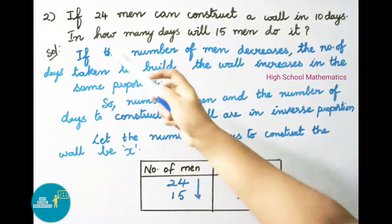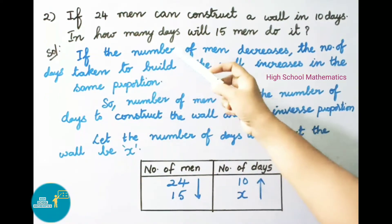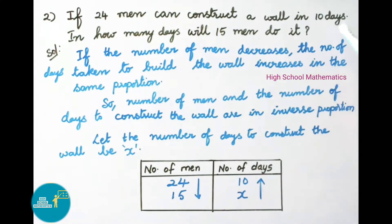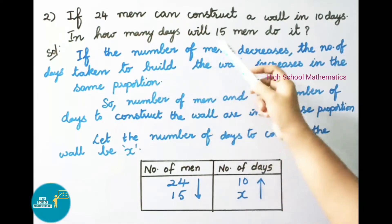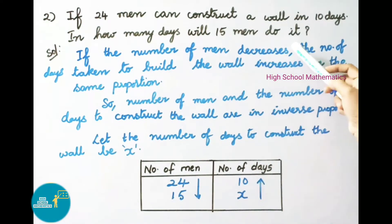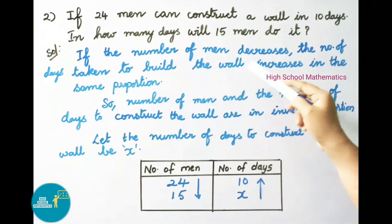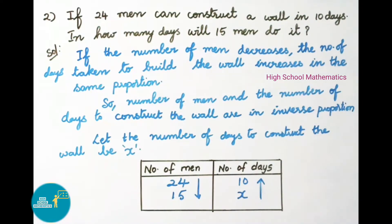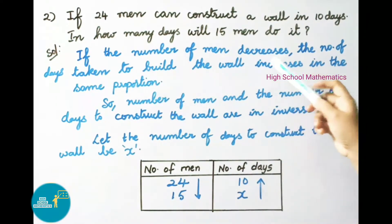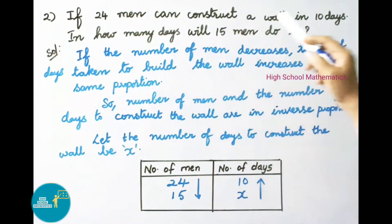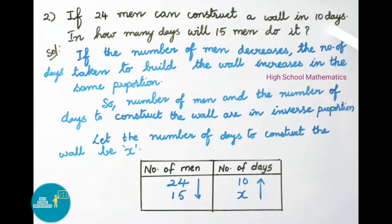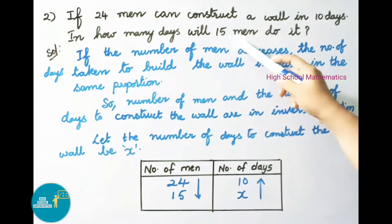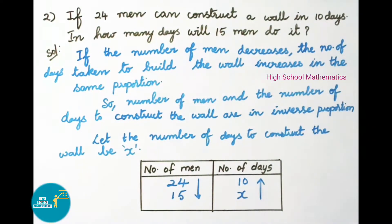See now question number two. If 24 men can construct a wall in 10 days, in how many days will 15 men do it? Let us see the solution.